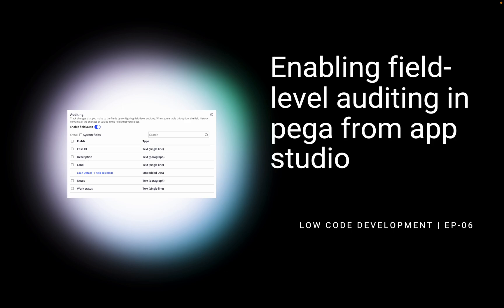Let's first understand what happens here. Whenever we develop any applications, there are a few important attributes, and if those attributes are getting changed, we want to keep track of that. We also want to keep a history so that in the future we can see reporting, or if any dispute happens, we can see who changed the value.